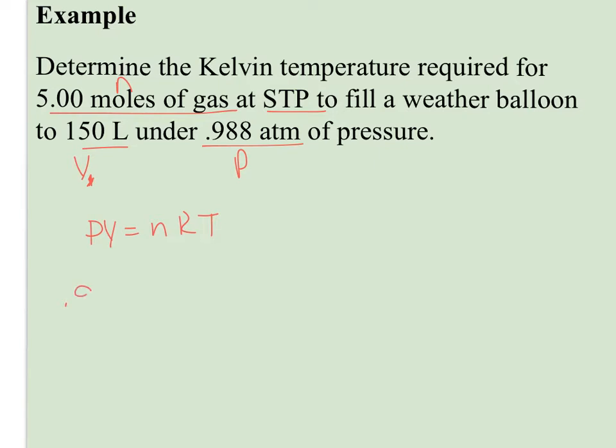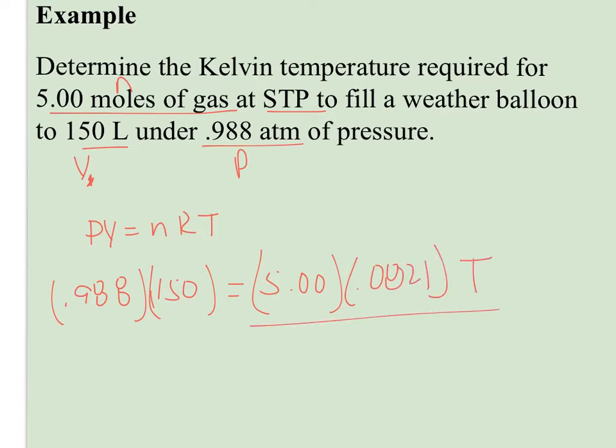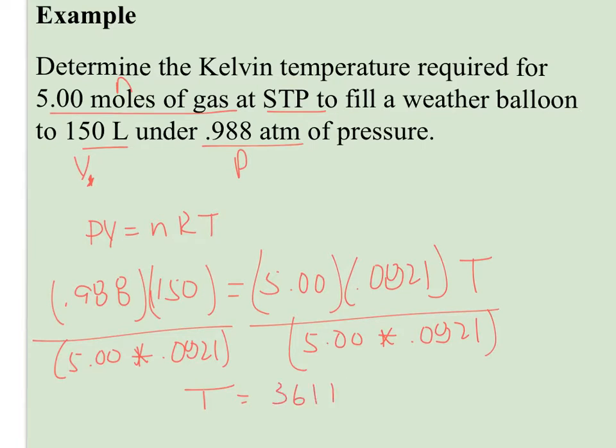I have my P, 0.988. I have my V, 150. I have n, 5.00. I can look R up, 0.0821. And I'm trying to find T. So I simply have to divide by the 5 times 0.0821 to get T alone. And if I go ahead and solve for T, I come up with a temperature of 361, and remember that's Kelvin.